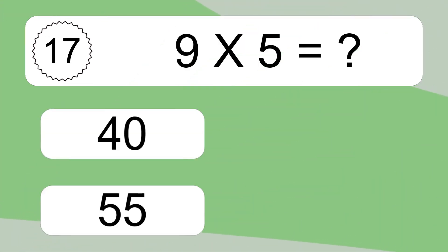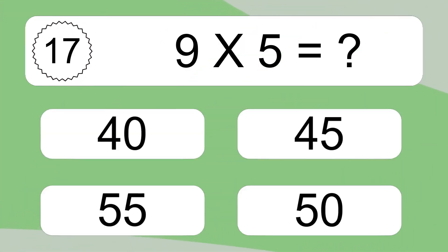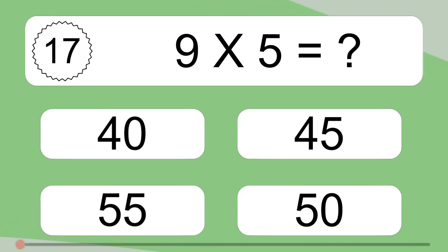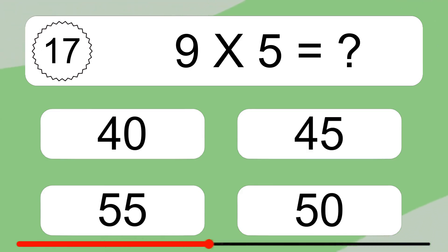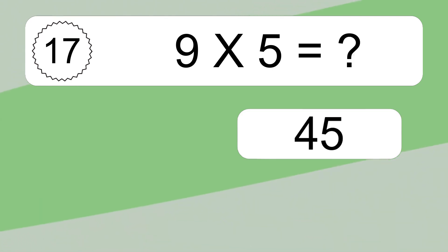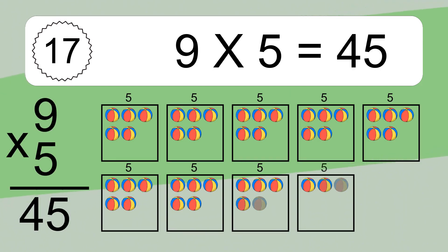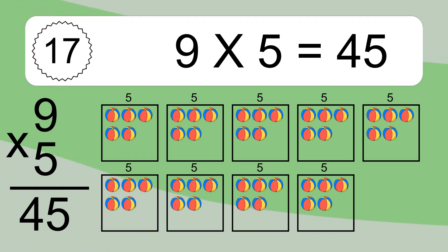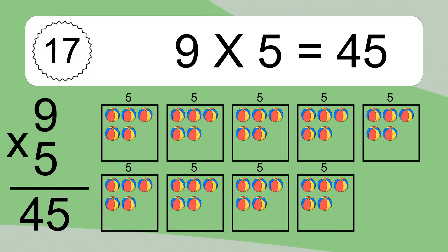9 times 5 equals what? 9 times 5 equals 45. We have 9 boxes, and each box has 5 colorful balls inside. If you count all the balls in all the boxes together, you will have 9 times 5 balls. This equals 45 balls.